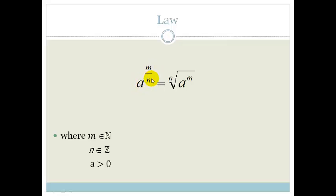a to the m over n is equal to the nth root of a to the m, where m is an element of natural numbers, n is an integer, and a is greater than 0. Obviously n has to be bigger than 0, otherwise you're dividing by an imaginary number because anything divided by 0 doesn't work.